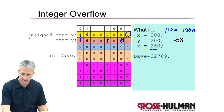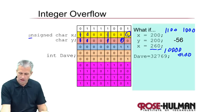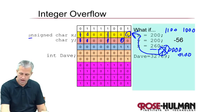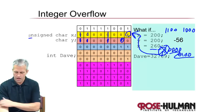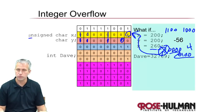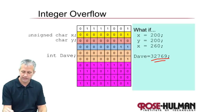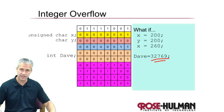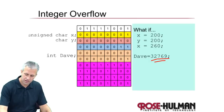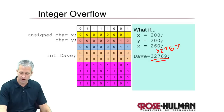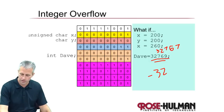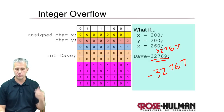Likewise, if you put 260 into a char, 260 requires more than 8 bits, so the top bit gets lost and you're left with only the bottom eight bits — which turns out to be 4. So putting in 260 gives you back 4. The same overflow problem exists with integers, it just doesn't happen until much larger numbers. For example, putting 32,769 into a signed int — where 32,767 would have fit fine — gives back a negative number.